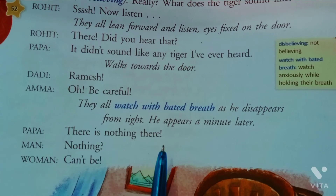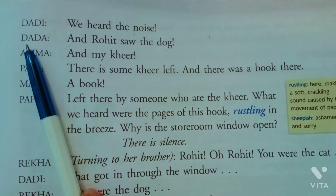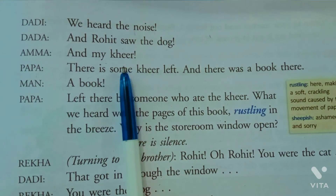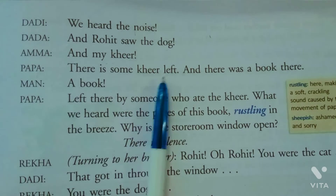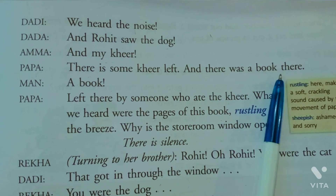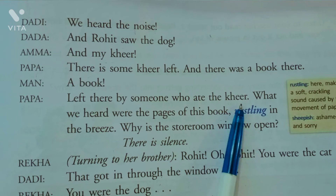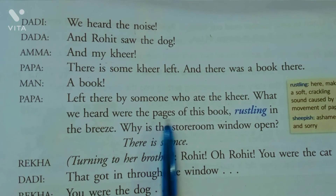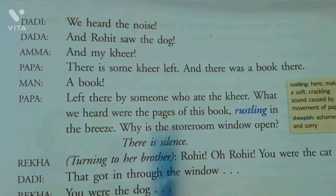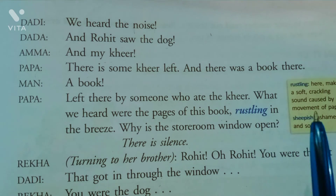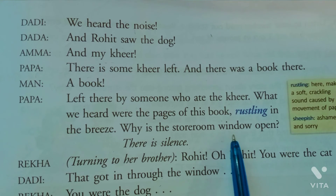Women boli 'Can't be!' Moving to the next page. 'We heard the noise.' Dada aur Rohit — saw a dog. Amma boli 'And my kheer?' Papa bolta hai 'There is some kheer left, and there was a book there — left there by someone who ate the kheer. What we heard were the pages of this book rustling in the breeze. Why is the storeroom window open?' Silence chhaa jaati hai.